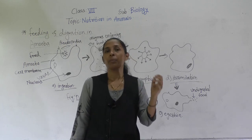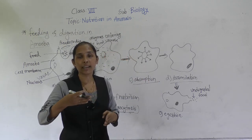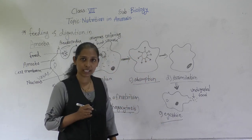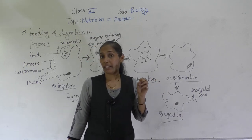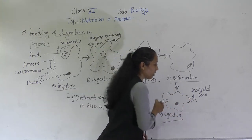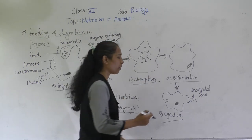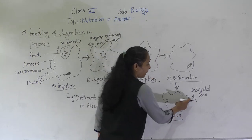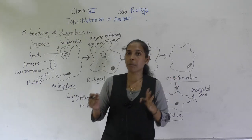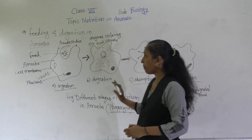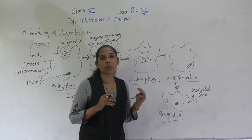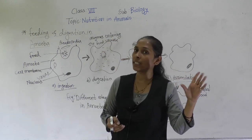Not all the food taken in gets digested — some amount becomes undigested food. The process of throwing out this undigested food is called egestion. When the undigested food is ready to be expelled, it moves to the cell membrane, which gets ruptured — that is, it breaks open — and the undigested food comes out from the body of amoeba.